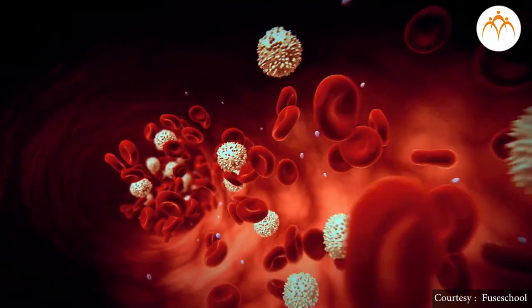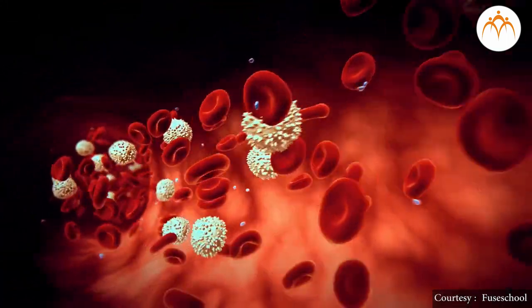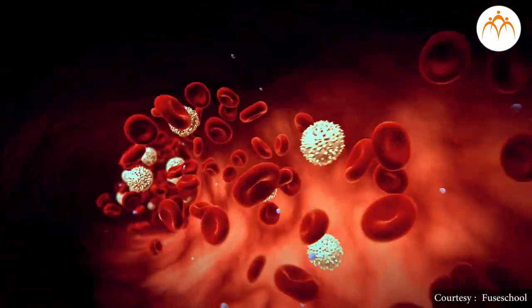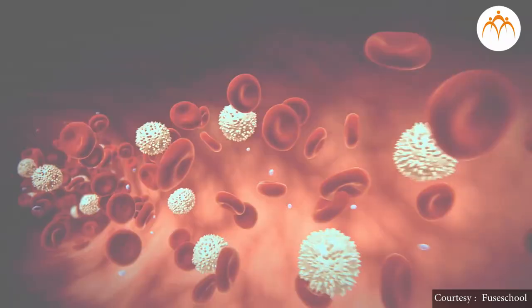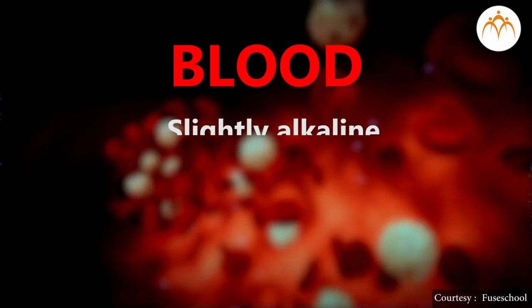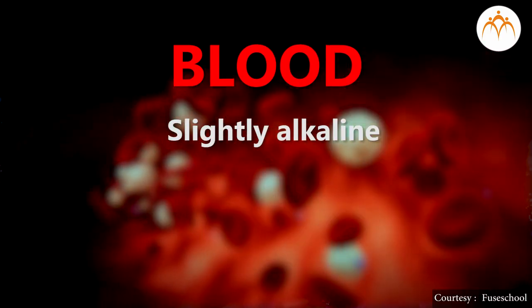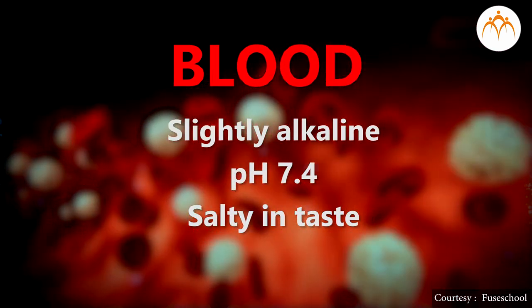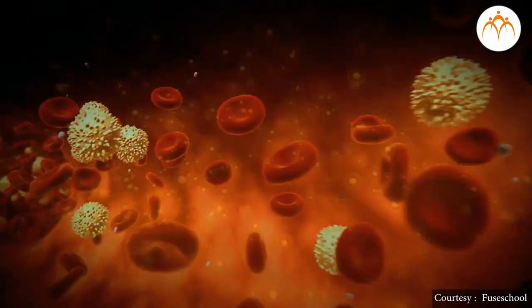Students, you know that inside our body, blood is present. Blood is a transporting medium. But it is not just a fluid — it is connective tissue. It is slightly alkaline with pH 7.4, and salty in taste. Actually, in blood there is a fluid called plasma, and blood cells are floated in plasma.